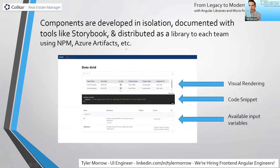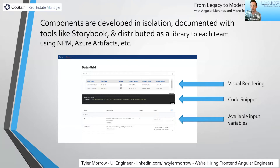We use Storybook for showing our documentation — delivering the components to developers and allowing them to see what the inputs are, copy the source code, and use the actual components in their codebase. That's the hardest part: getting buy-in from your team. No design system is going to succeed without proper documentation, and so far Storybook has been working pretty well.